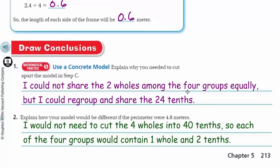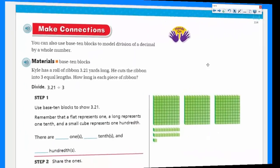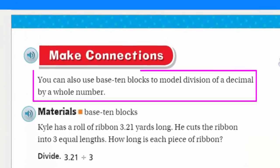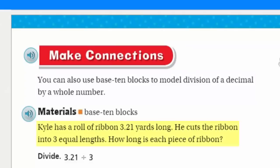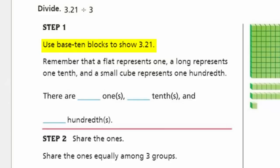Time for page master. Making some connections. You can also use base 10 blocks to model division of a decimal by a whole number. The materials here are base 10 blocks. Kyle has a roll of ribbon 3 and 21 hundredths yards long. He cuts the ribbon into 3 equal lengths. How long is each piece of ribbon? We're dividing because we're taking that total quantity of 3 and 21 hundredths yards and we need to make 3 equal lengths: 3 and 21 hundredths divided by 3. Step 1: use base 10 blocks to show 3 and 21 hundredths. Remember that a flat represents 1, a long represents 1 tenth, and a small cube represents 1 hundredth.